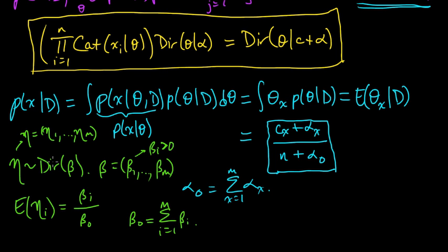So a Dirichlet distribution is a probability distribution over probability distributions. So you have to get your head wrapped around that a little bit. Not over arbitrary probability distributions, it's over the PMFs on 1 through m. In this case, m. And so this is just the expression for the expected value of the i-th coordinate of that function.